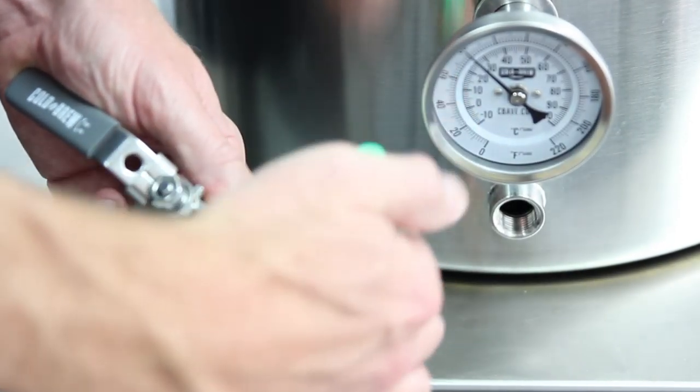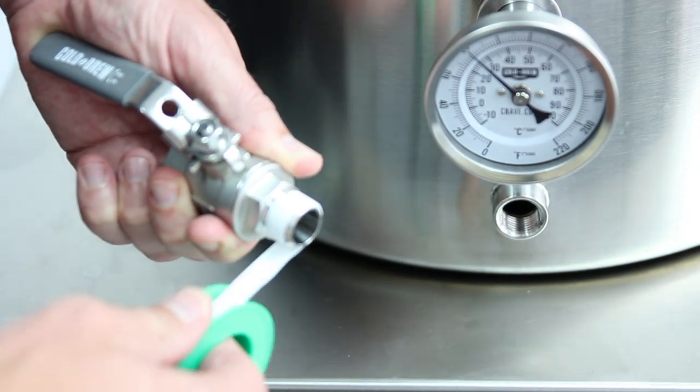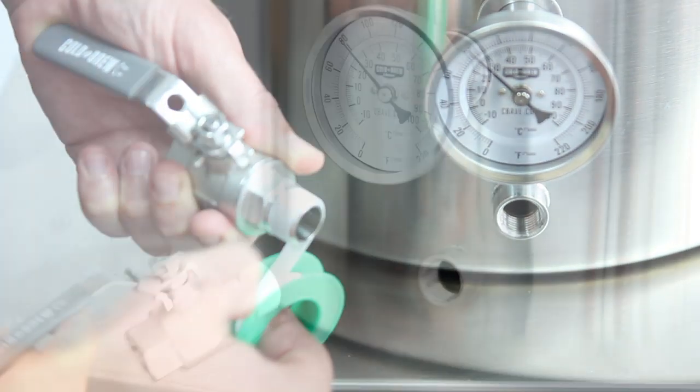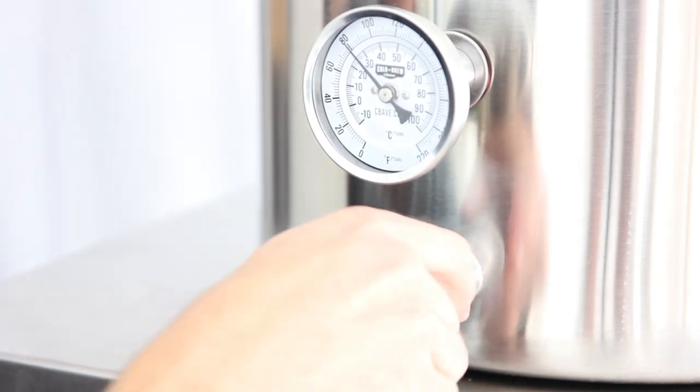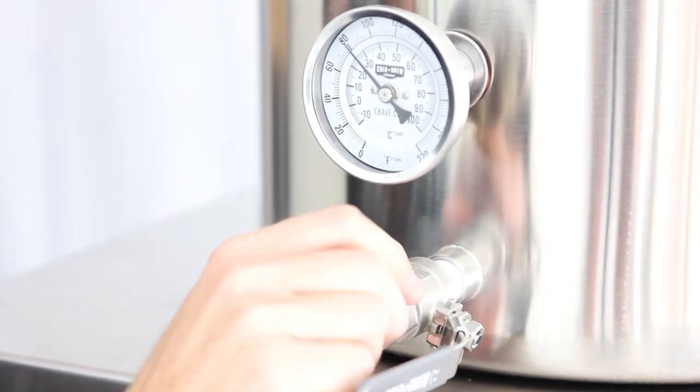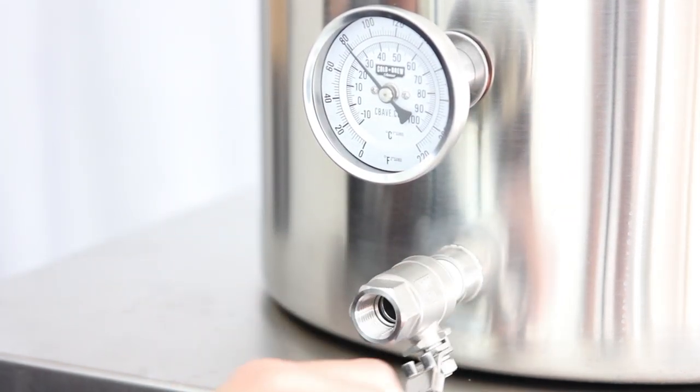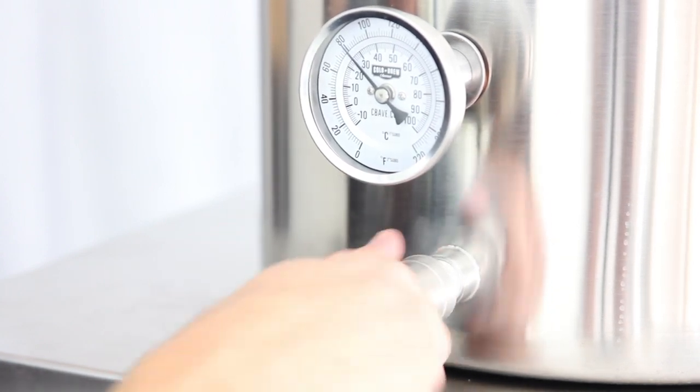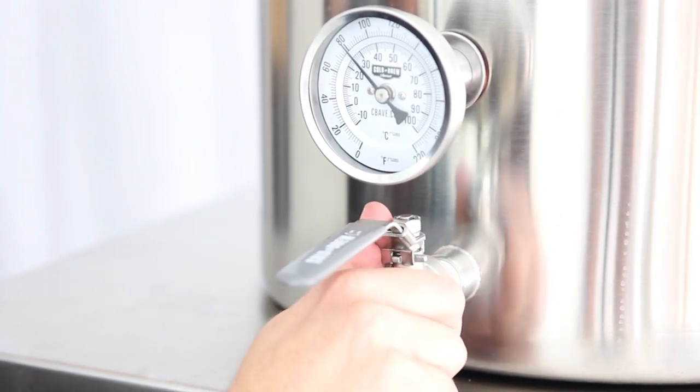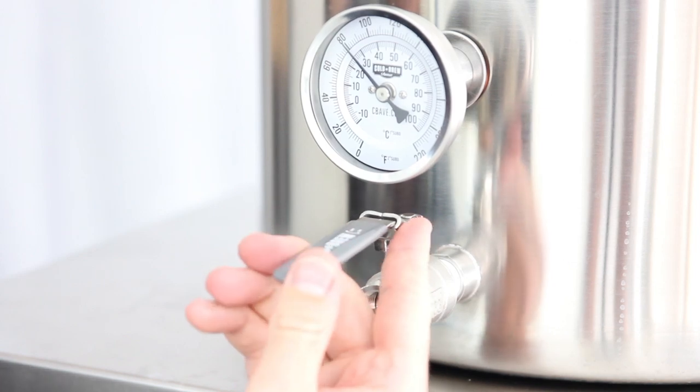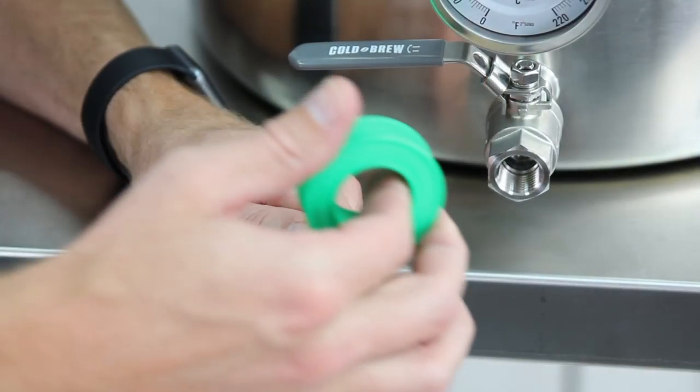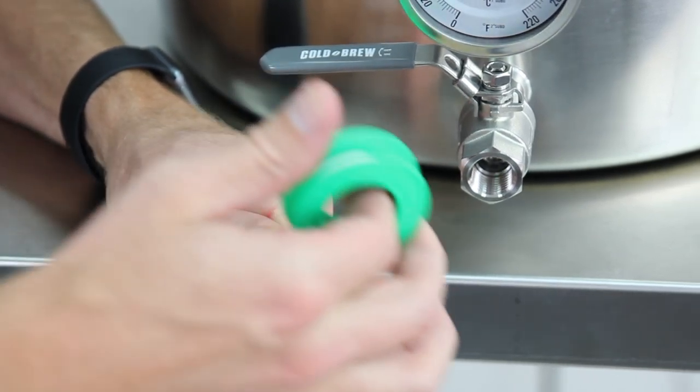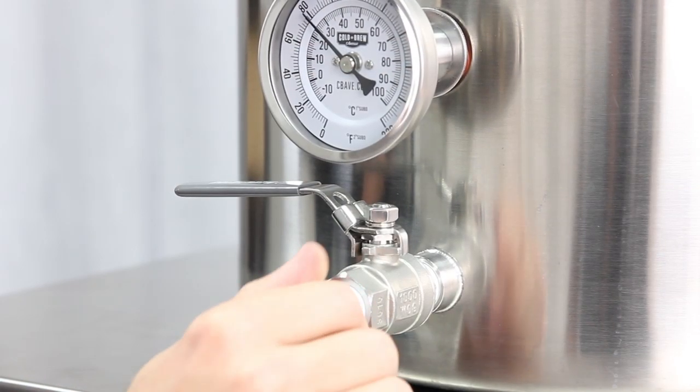Then wrap your ball valve fitting a few times with Teflon tape and screw into the bottom hole of the kettle. Finally, wrap your hose barb a few times with Teflon tape and screw into the ball valve.